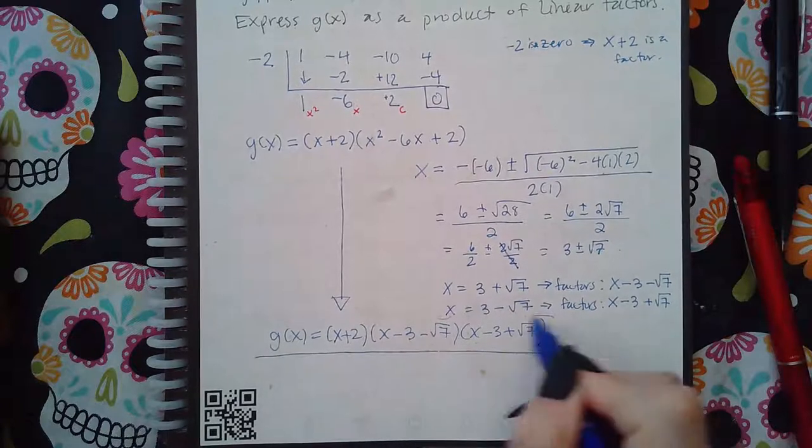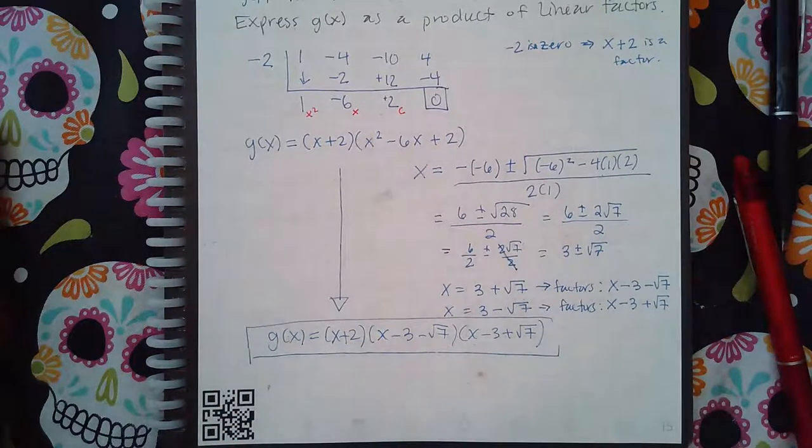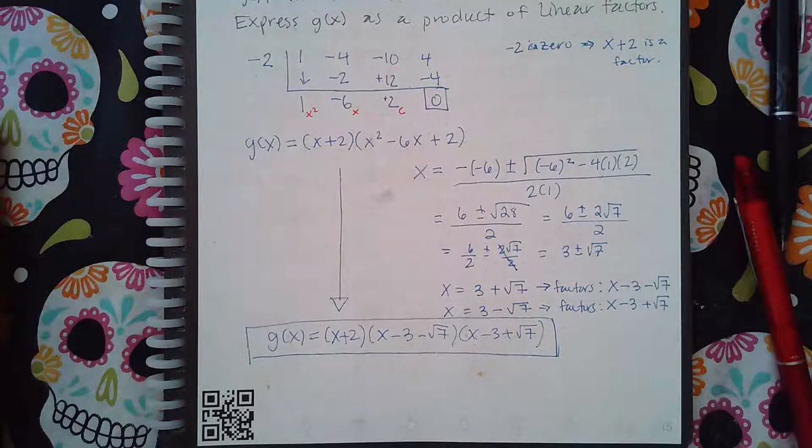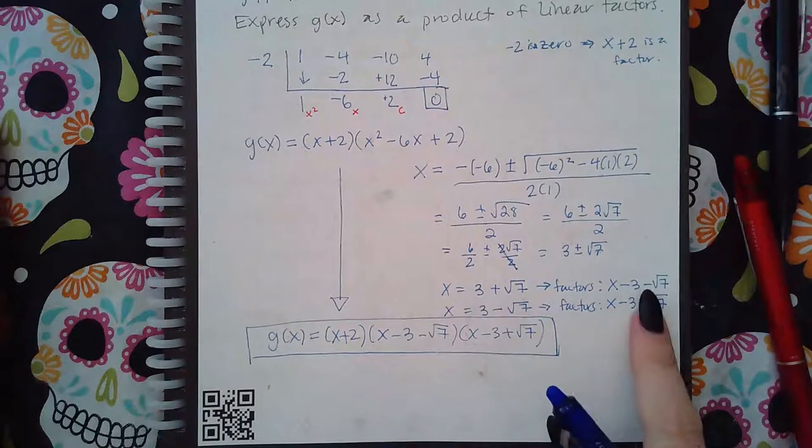So not only do you need to find those x values, you need to find the corresponding factors. And it will always be x and then the opposite signs. And if you have two terms, take the opposite signs of both.